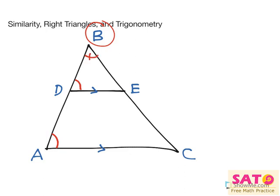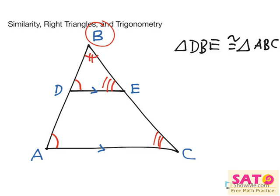So we can say that they both share that angle, which means that they both have two angles in common, which also means they share a similarity of the third angle. So we can say that these two triangles, triangle DBE, is congruent to triangle ABC. And that's because of the AA theorem.